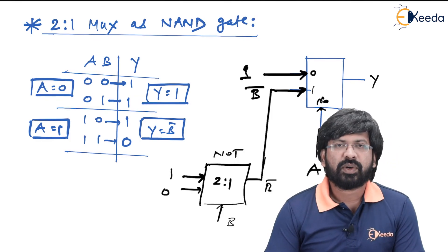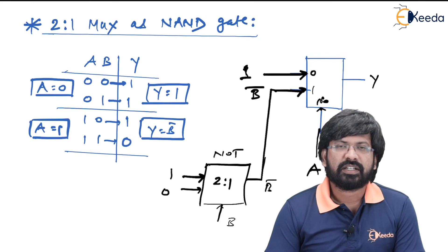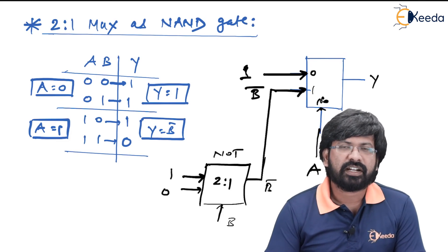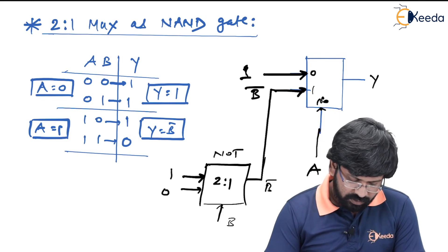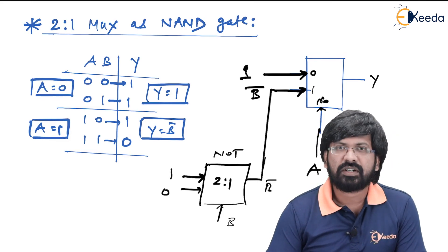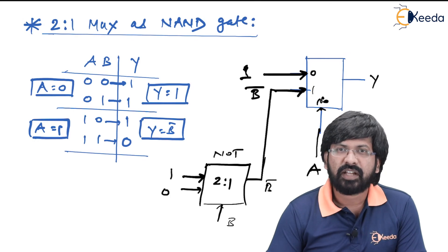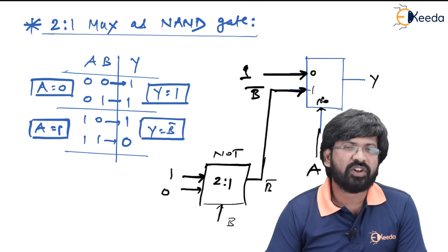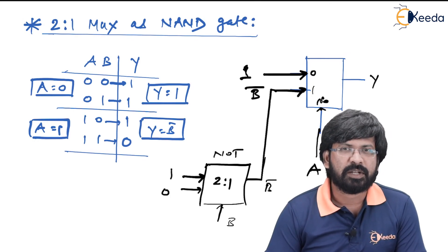I am sure now you can implement even any other gate. You can try implementing NOR gate, XOR gate, and XNOR gate using 2-to-1 multiplexer. Thank you.